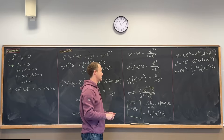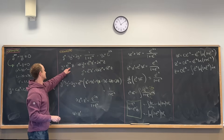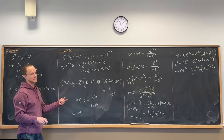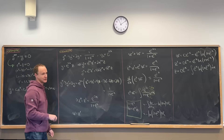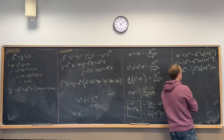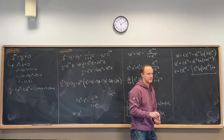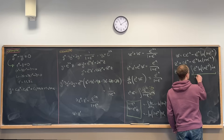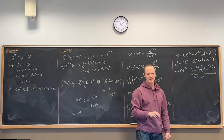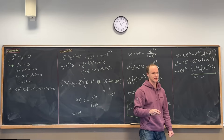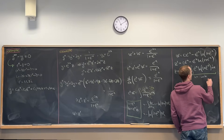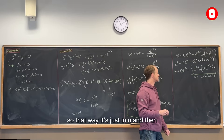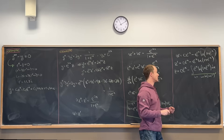Notice that y equals e to the 2x times z, so we can write y down once we resolve this remaining integral. The integral of e to the minus x times the natural log of 1 plus e to the minus x is tricky. You can do integration by parts, but there's a nicer substitution: set u equal to the natural log of 1 plus e to the minus x. This is a bit easier since it gets rid of the natural log.